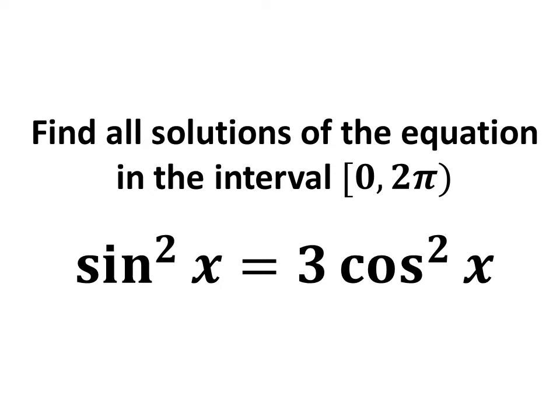In this video, we will learn to find all solutions of the equation in the interval 0 to 2π, where the square of sine of x is equal to 3 times the square of cosine of x.